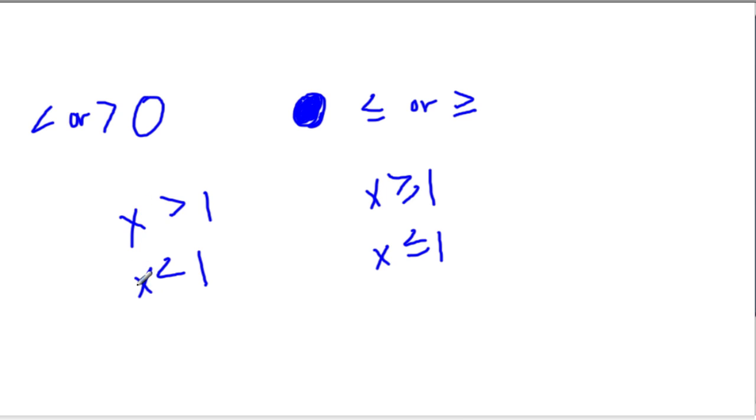Same thing here, anything less than 1, there are an infinite number of numbers that are less than 1. The only difference here is that x can also be 1. It's saying x is greater than or equal to 1.